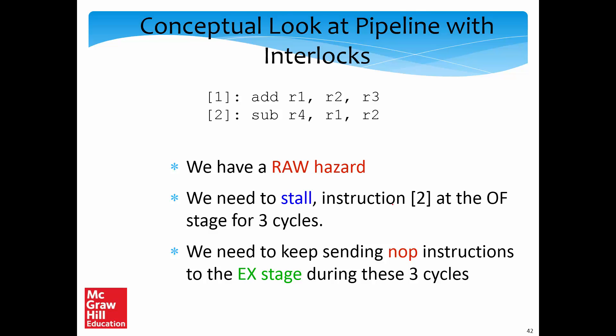Let's take a conceptual look at a pipeline with interlocks. Consider two instructions with a RAW dependence: the first writes to R1, the second reads from R1. We need to stall instruction 2 at the OF stage for three cycles until it gets the correct value of R1. To achieve this in hardware we simulate what software does: we keep sending NOP instructions to the EX stage for the next three cycles until R1 gets written and instruction 2 can read it.